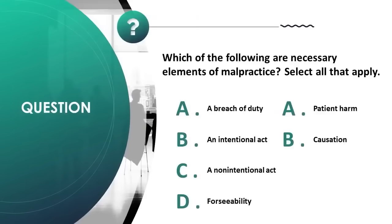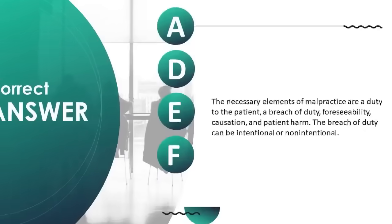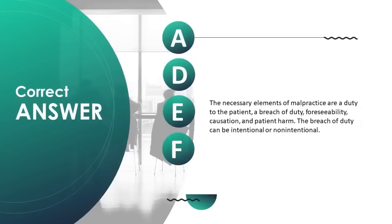Which of the following are necessary elements of malpractice? Select all that apply. A) a breach of duty, B) an intentional act, C) a non-intentional act, D) foreseeability, E) patient harm, F) causation. Correct answer is A, D, E, F. The necessary elements of malpractice are a duty to the patient, a breach of duty, foreseeability, causation, and patient harm. The breach of duty can be intentional or non-intentional.